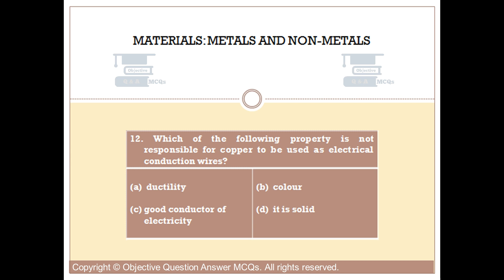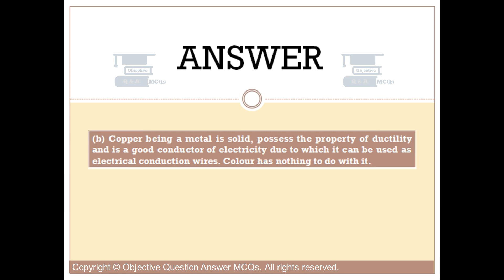The right answer is option B. Copper, being a metal, is solid, possesses the property of ductility, and is a good conductor of electricity — due to which it can be used as electrical conduction wires. Color has nothing to do with it.